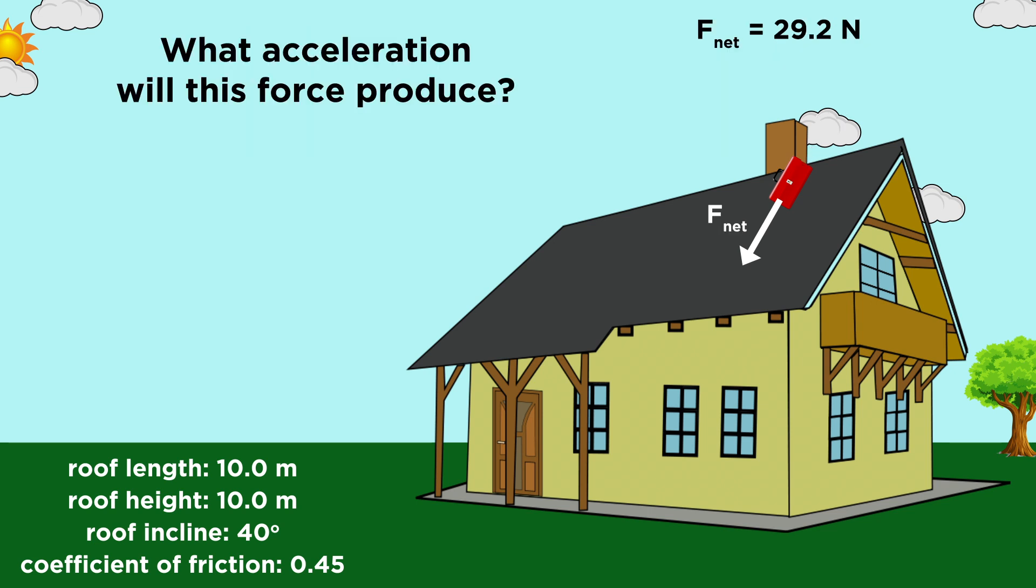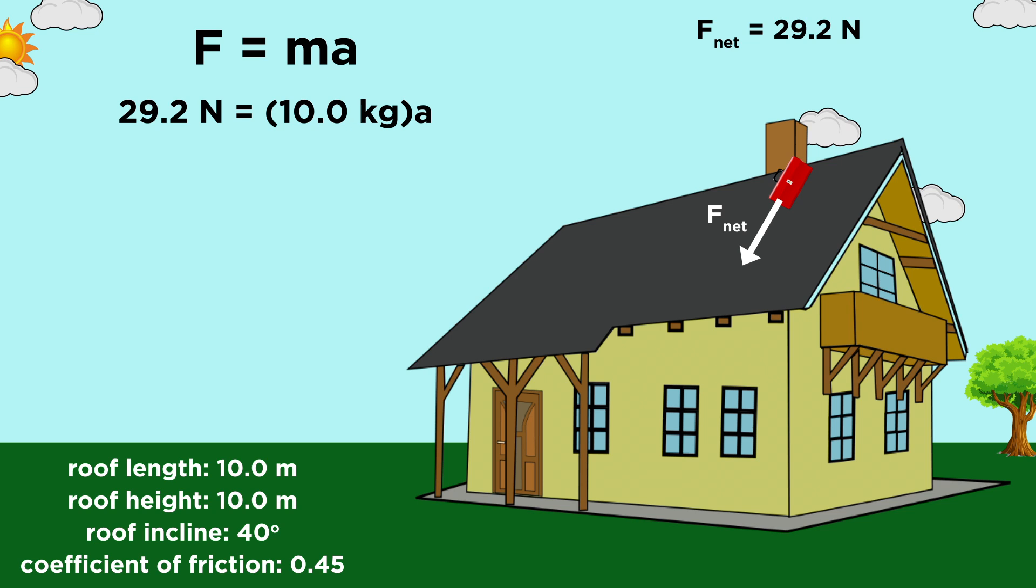Now to find the acceleration of the box, that will just require Newton's second law, F equals M A. Twenty-nine point two goes in for F, ten kilograms for M, and that gives us two point nine two meters per second squared as the acceleration.